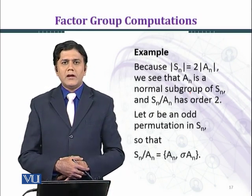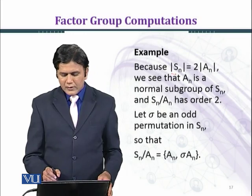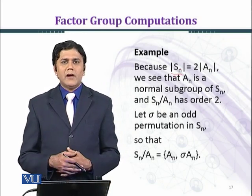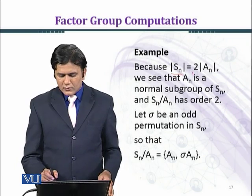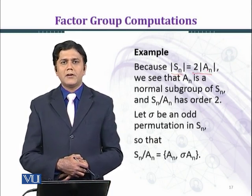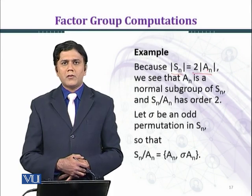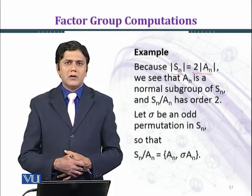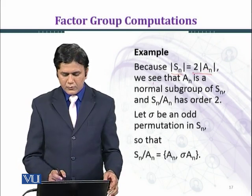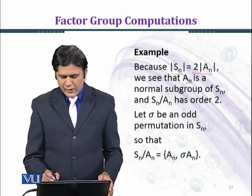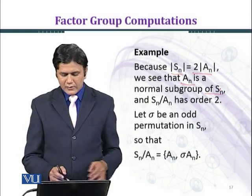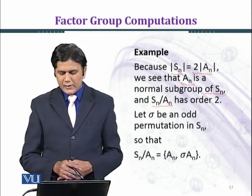Let's consider an example. The order of S_n — the symmetric group — has n! elements, which equals 2 times the order of A_n. A_n is the alternating group, the set of all even permutations, which forms a group. We know that A_n is a subgroup of S_n, and we see that A_n is a normal subgroup of S_n, with S_n over A_n having order 2.